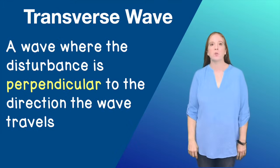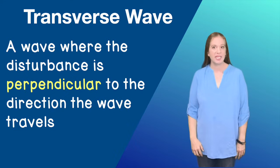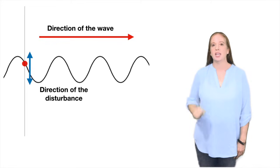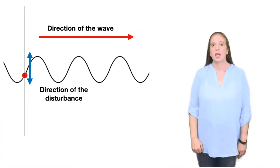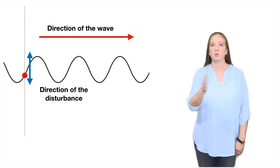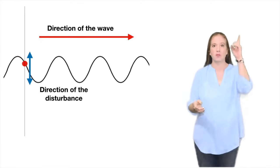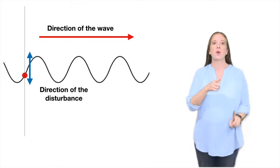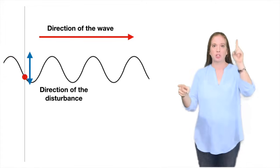A transverse wave is a wave where the disturbance is perpendicular to the direction the wave travels. Look at the red dot representing the disturbance. Notice how the wave is moving from left to right and the red dot is actually moving up and down. The two directions are perpendicular to each other.